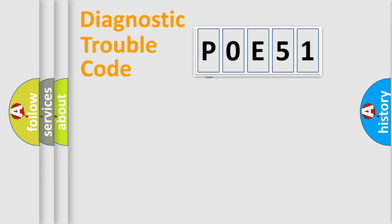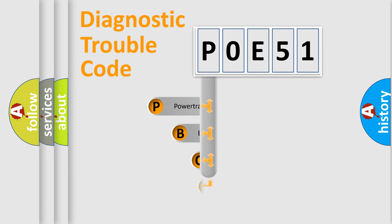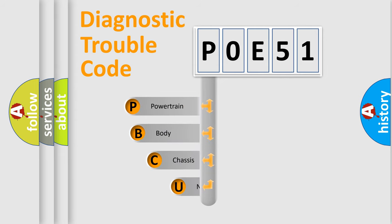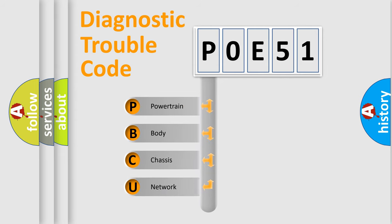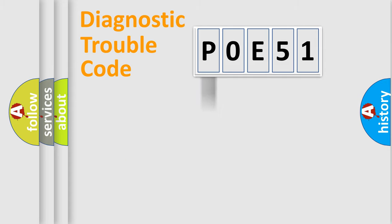First, let's look at the history of diagnostic fault code composition according to the OBD2 protocol, which is unified for all automakers since 2000. We divide the electrical system of an automobile into four basic units: Powertrain, Body, Chassis, and Network. This distribution is defined in the first character of the code.